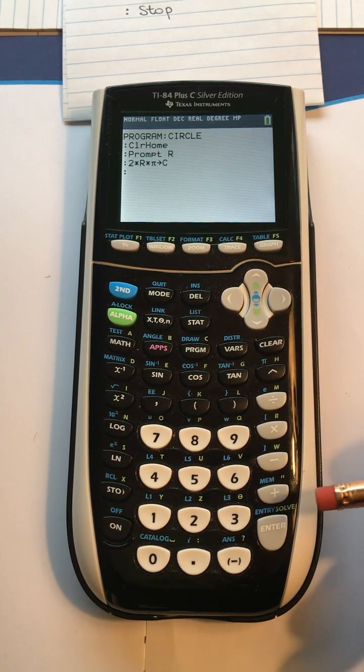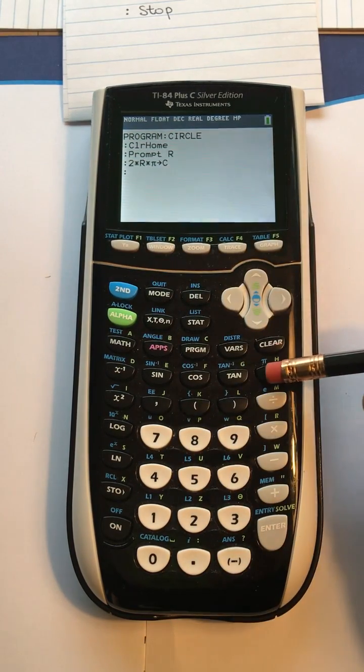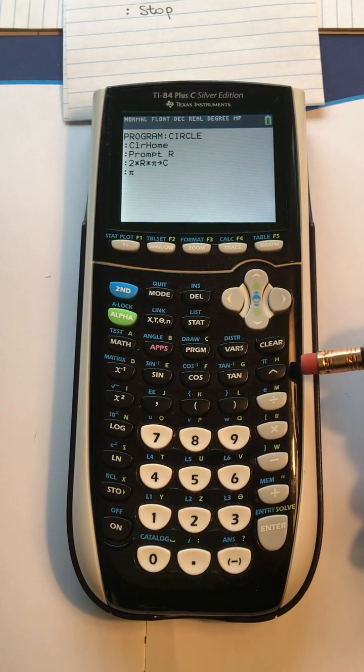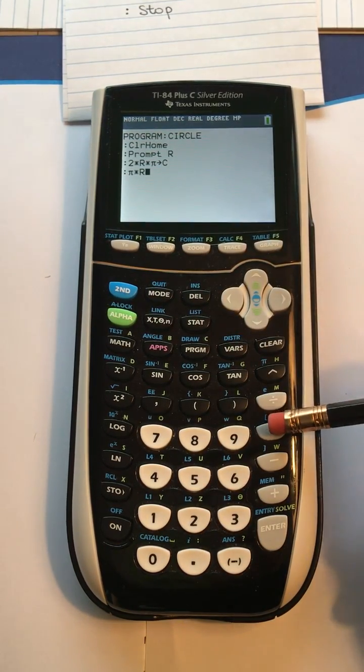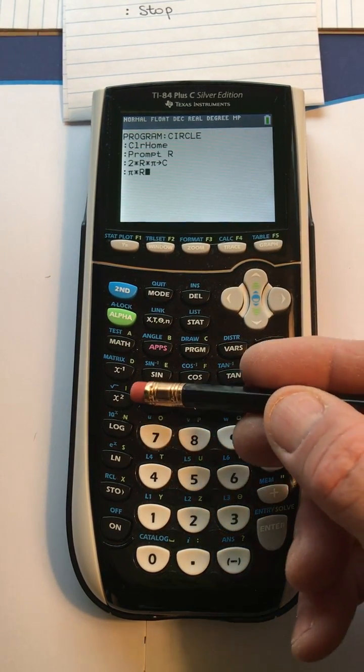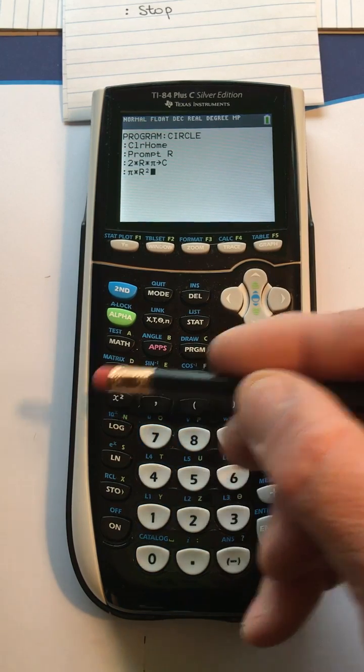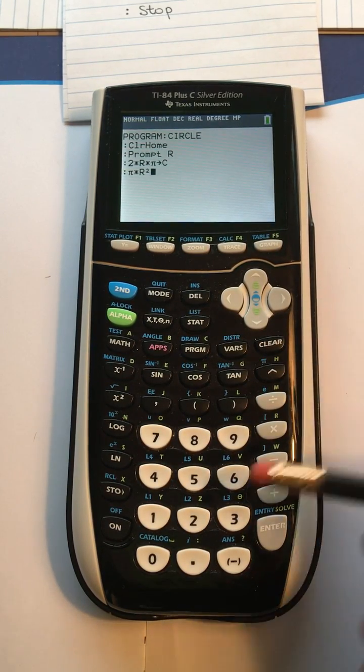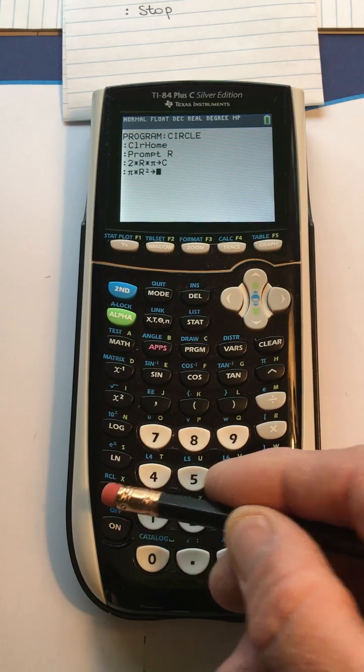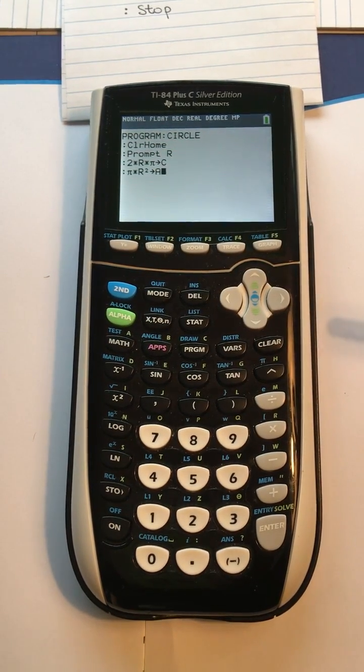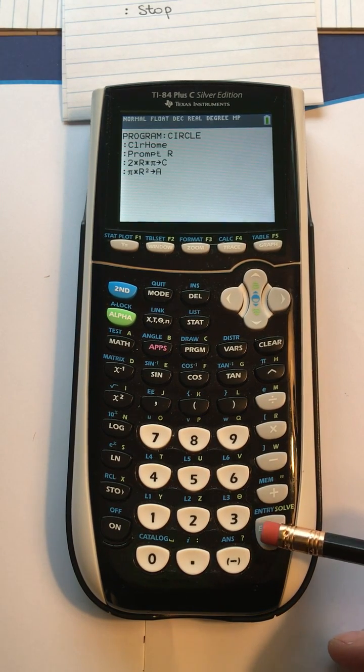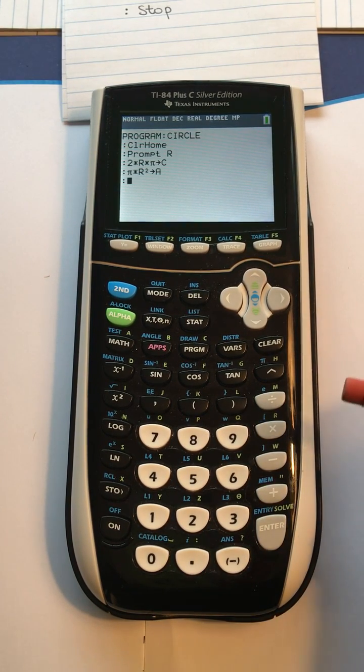Press enter, and then we do pi times the radius, alpha R, and then the square is that key right there, square key, square. And now we want to store that in A for area, store alpha A. So that completes the two formulas or the calculation, and now we want to display the answers.